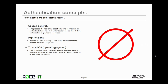There is access control — the process of establishing specifically who or what can be authenticated and how that authentication will be done before authorization is granted to resources. Another authentication concept is implicit deny: all access is automatically denied through implicit deny until the authentication process has been completed. And finally, there is the trusted OS, or trusted operating system. This is used to denote an operating system that uses multiple layers of security before access is granted to resources on the system, implementing authentication and authorization before granting access.